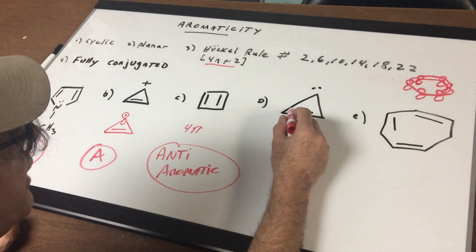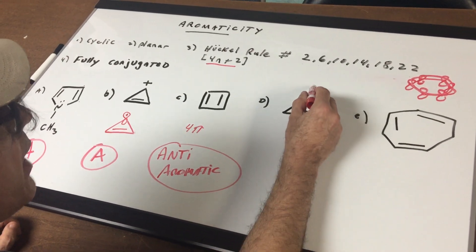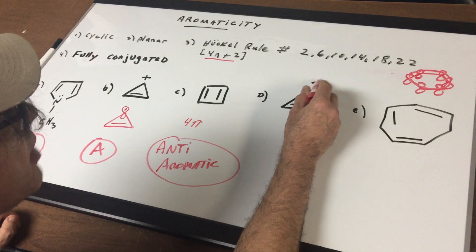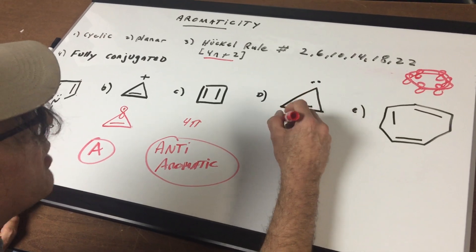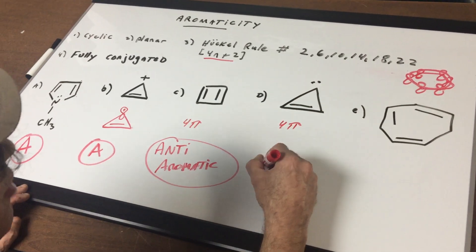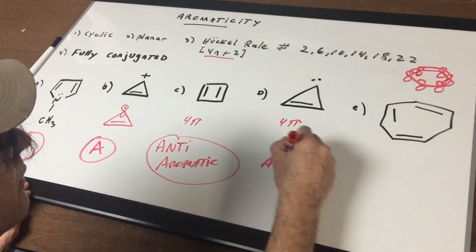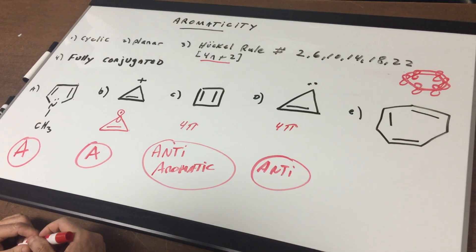In this example, it's the same idea. You count two here. When you have two dots on the outside of a carbon, you do count them. So once again, 4 pi electrons. And this would be another system that's anti-aromatic.